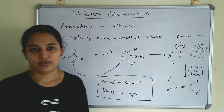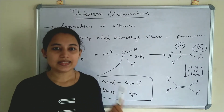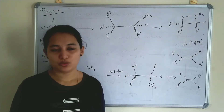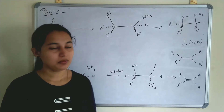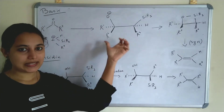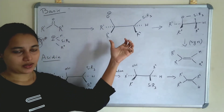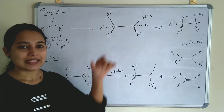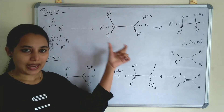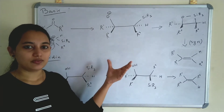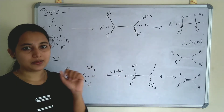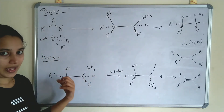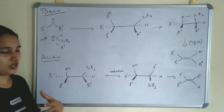Peterson Olefination is the formation of alkenes from a ketone, via a beta-hydroxy-silane compound, and then an alkene is formed. Now we can see the detailed mechanism of Peterson Olefination. We are discussing the basic condition mechanism first. In basic conditions, the elimination will be syn-elimination, and in acidic conditions it will be anti-elimination.